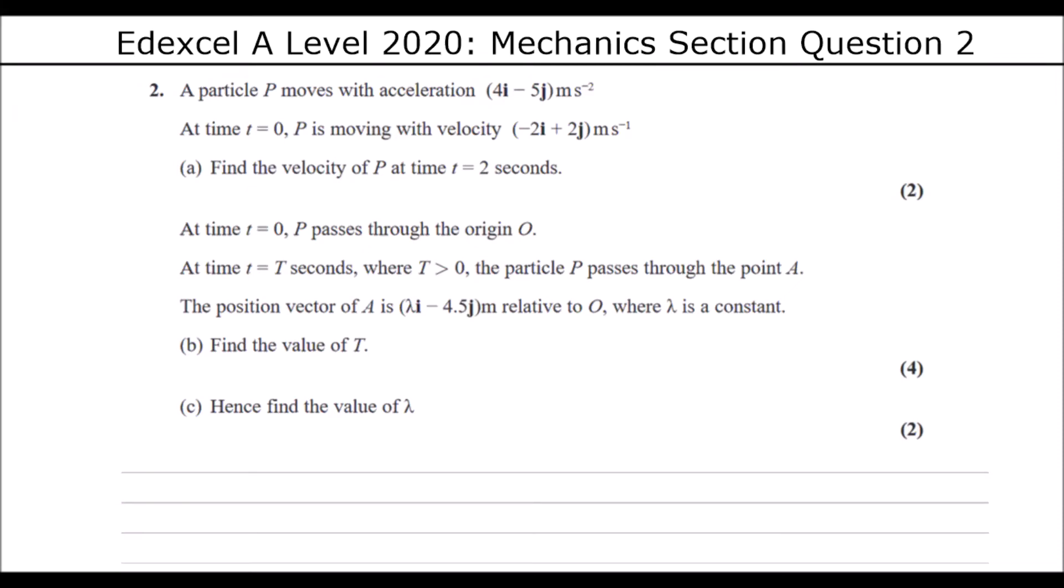A particle P moves with acceleration 4i minus 5j meters per second squared. At time t equals 0, P is moving with velocity minus 2i plus 2j meters per second. Find the velocity of P at time t equals 2 seconds.